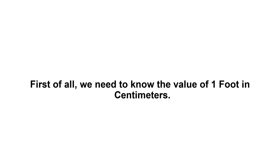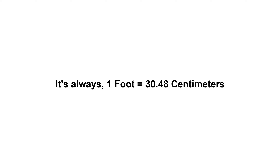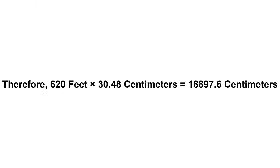620 feet in centimetres. First of all, we need to know the value of 1 foot in centimetres. 1 foot equals 30.48 centimetres. Now we have to multiply 30.48 by 620. Therefore, 620 feet times 30.48 centimetres equals 18,897.6 centimetres.